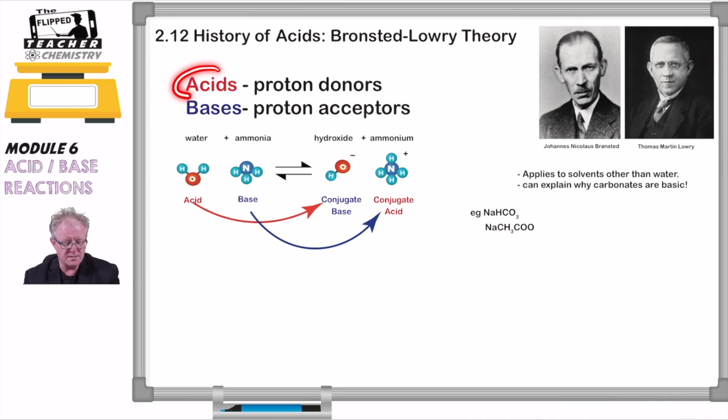So this theory says that acids are proton donors, they donate a proton, and bases are proton acceptors. So if we have water here, and we have ammonia, now remember ammonia has no OH- ion, so according to Arrhenius it shouldn't be a base, but it is. Let's see how.